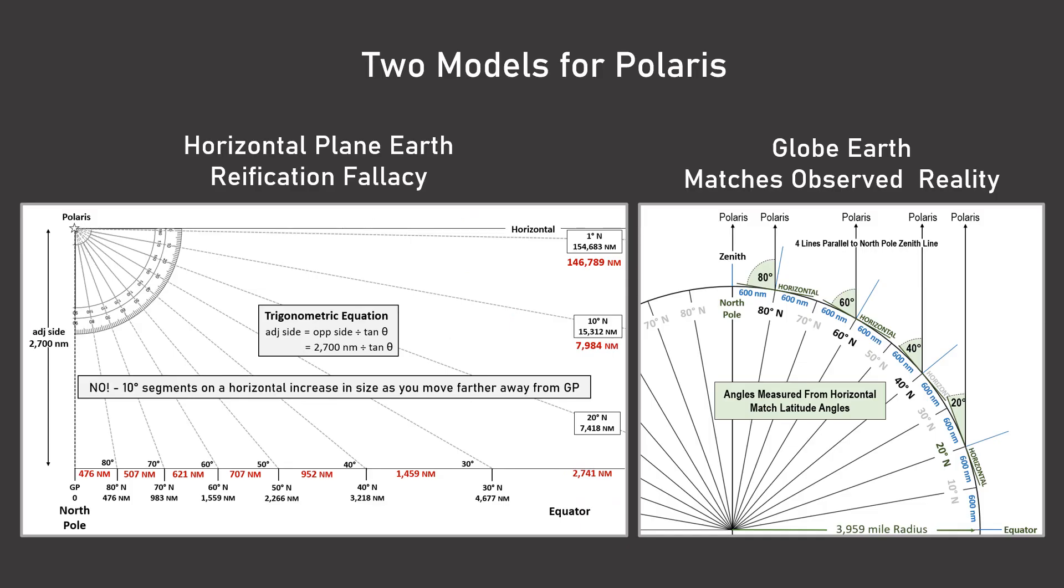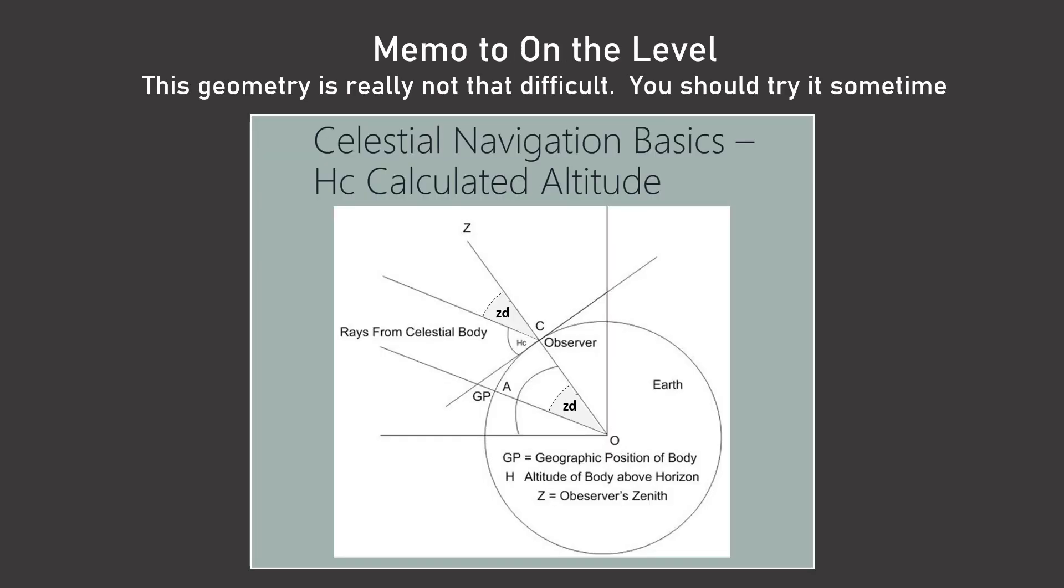So here we have two models for Polaris. The horizontal plane Earth model, which is a reification fallacy, and the globe-earth model, which matches observed reality. So for Bev and his companions, this geometry really is not that difficult. You should try it sometime. Just try thinking of what the fuck you can do with an angle.